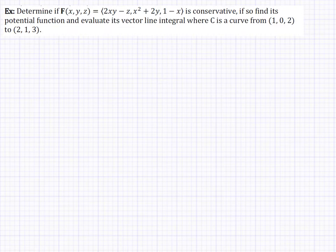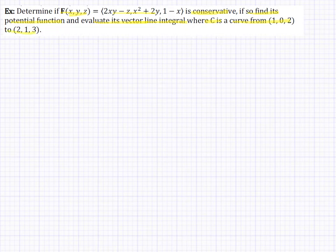Here's another example: determine if the vector field F is conservative. If so, find the potential function and evaluate the vector line integral, where the curve goes from (1, 0, 2) to (2, 1, 3). These directions lead you through how to solve it, but not every problem will do that — most will just say to evaluate the vector field over a curve, and you'll need to decide whether to use the conservative vector field theorem or the original parametric formula.